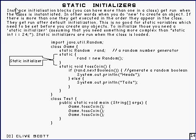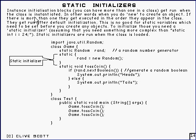If you think about instance initialization blocks, you can have more than one, and if you've got more than one, what happens is they run in the order in which they appear in the class. You're going to want those to run whenever you create a new object. The technical term for that is when the class is instantiated — that just means when you call new to create a new object.